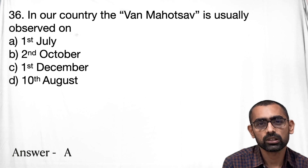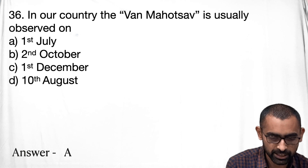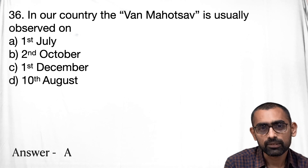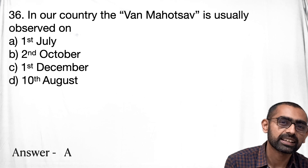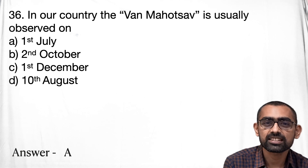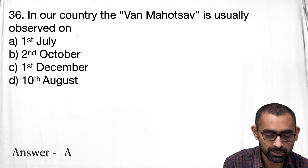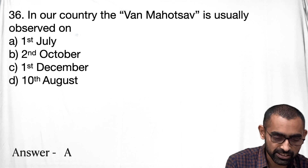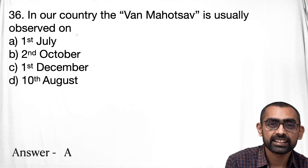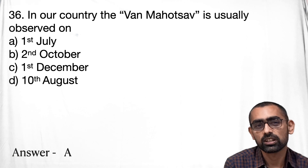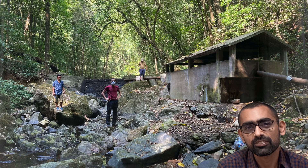Question number 36 is about Van Mahotsav. For those who don't understand much Hindi, 'van' means forest and 'mahotsav' means a festival. If you are following updates on the district page, you will notice that the forest department, along with other departments, celebrates this during the first week of July — generally July 1st — in addition to World Environment Day.